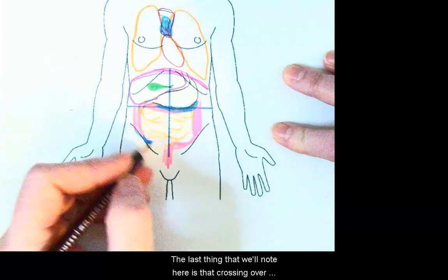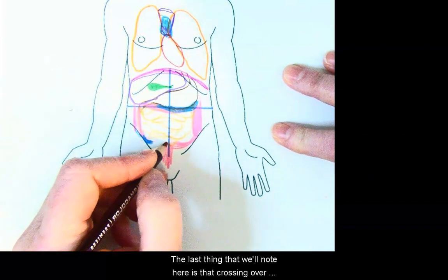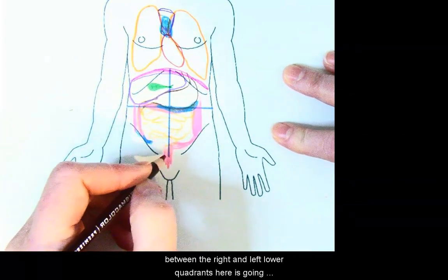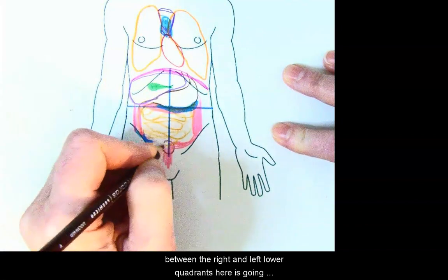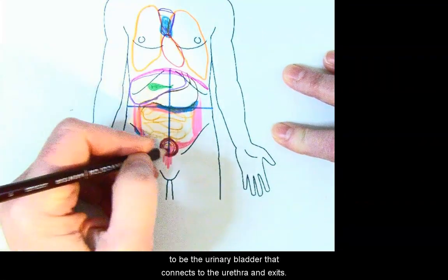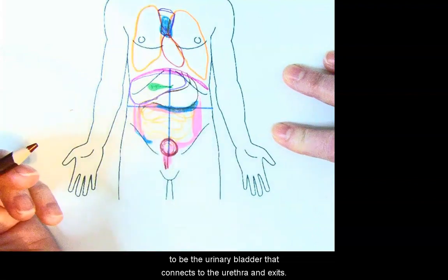Last thing that we'll note here is that crossing over between the right and left lower quadrants here is going to be the urinary bladder that connects to the urethra and exits.